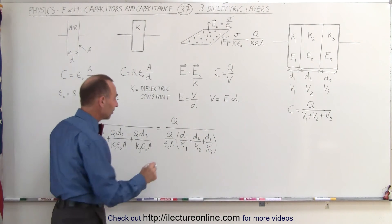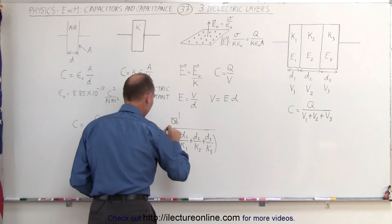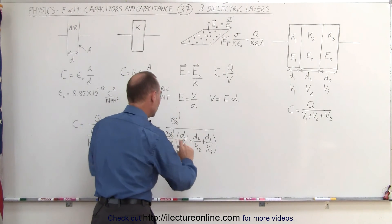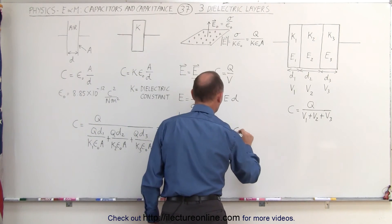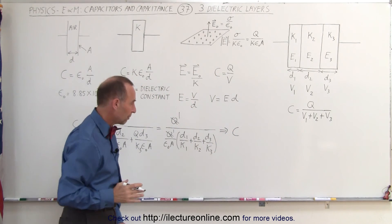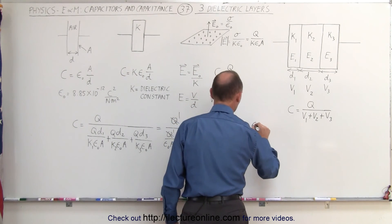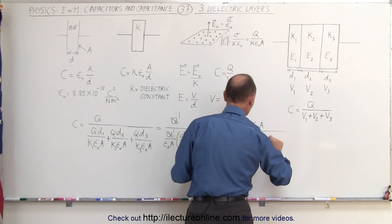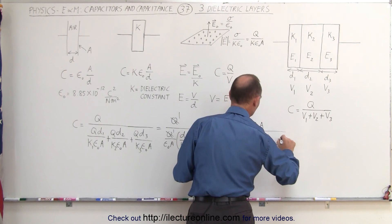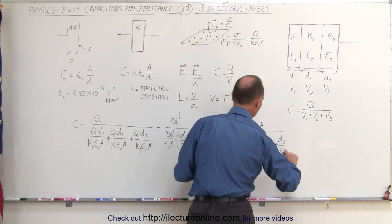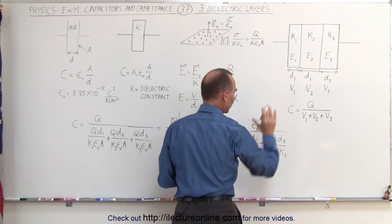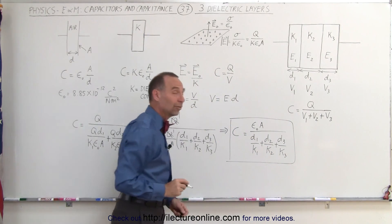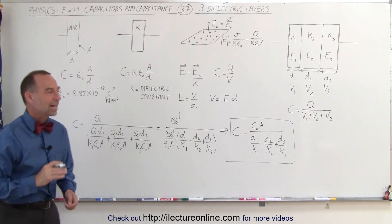Notice that the q's cancel out, so this becomes one, and we can move the remaining factor to the numerator. We can then say that the capacitance of a triple-layered dielectric capacitor is equal to epsilon sub nought times a divided by the sum d1 over k1 plus d2 over k2 plus d3 over k3. The d's are the thicknesses of each of the three layers, and the k's are the dielectric constants of each of the three layers. And that's how you find the capacitance of a capacitor that has three dielectric layers in it.